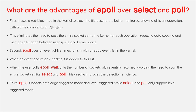What are the advantages of EPOLL over SELECT and POLL? First, it uses a red-black tree in the kernel to track the file descriptors being monitored, allowing efficient operations with a time complexity of O(log N). This eliminates the need to pass the entire socket set to the kernel for each operation, reducing data copying and memory allocation between user space and kernel space. Second, EPOLL uses an event-driven mechanism with a ready event list in the kernel. When an event occurs on a socket, it is added to this list. When the user calls epoll_wait, only the number of sockets with events is returned, avoiding the need to scan the entire socket set like SELECT and POLL, greatly improving detection efficiency. Third, EPOLL supports both edge-triggered mode and level-triggered mode, while SELECT and POLL only support level-triggered mode.